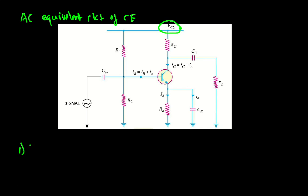The first step is to remove all DC sources. The second step: since for AC the capacitor offers negligible reactance — ideally zero reactance to AC — we short all capacitors. Shorting means we replace the capacitor and connect those terminals by a wire.